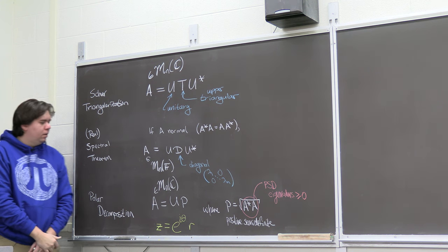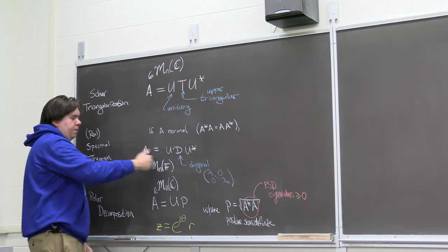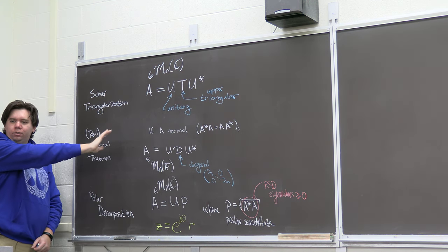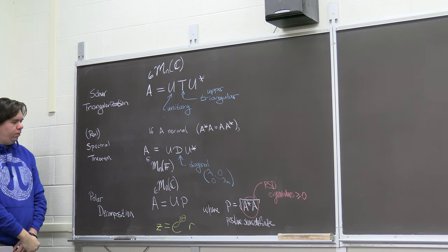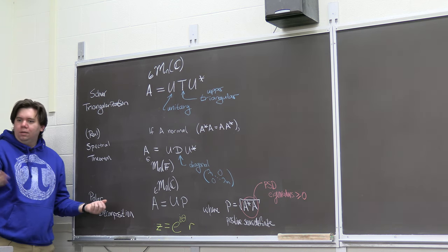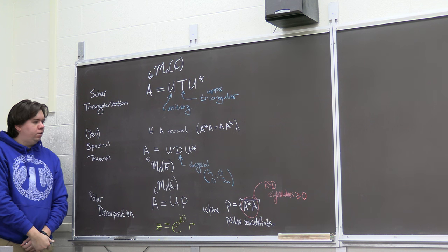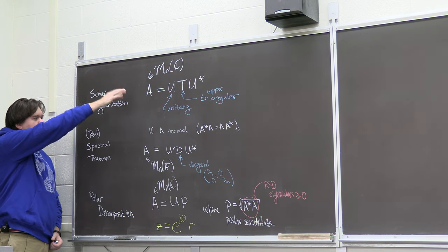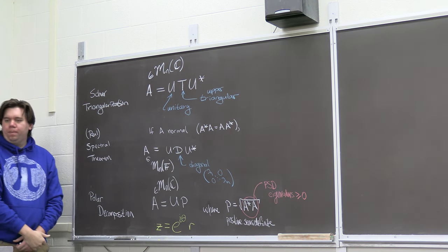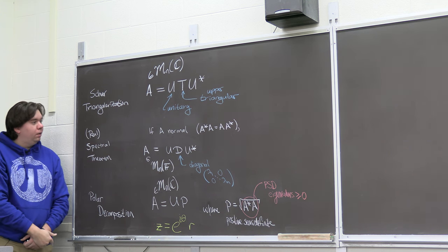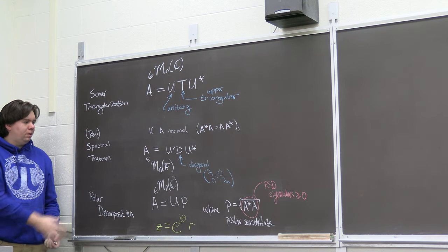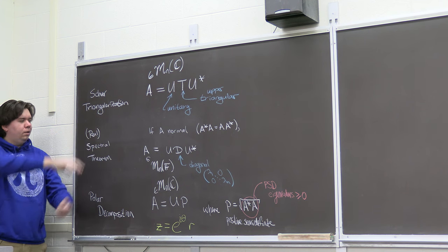There are a couple of shortcomings of these results. First, the most interesting statement — the spectral theorem — requires A to be normal, and we don't want that restriction. Second, everything so far is only true for square matrices, which is a pretty small class. So what we want is a more general result where all of these are special cases, without the restriction that A be normal or square.